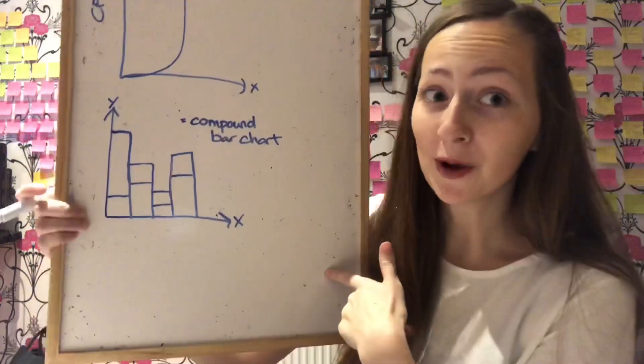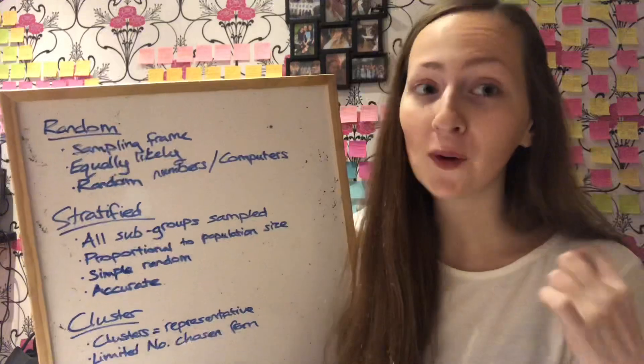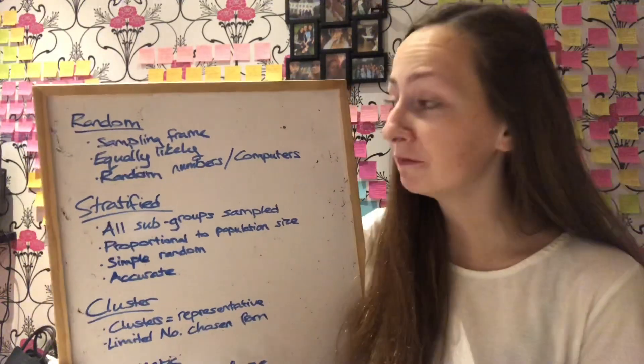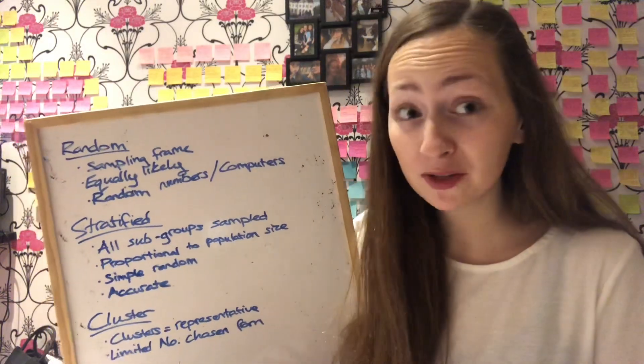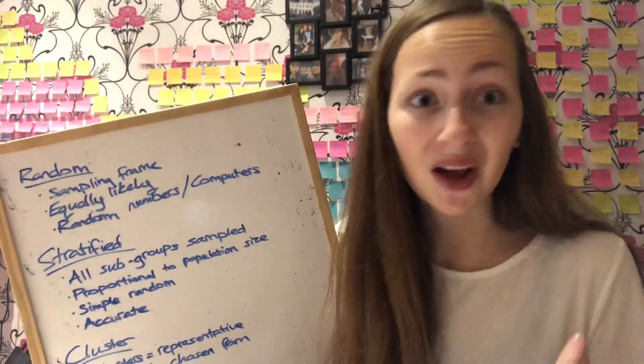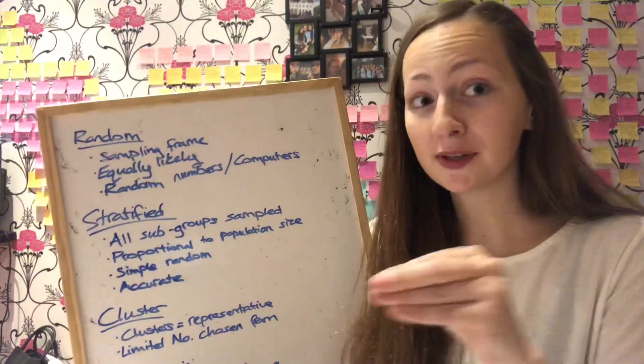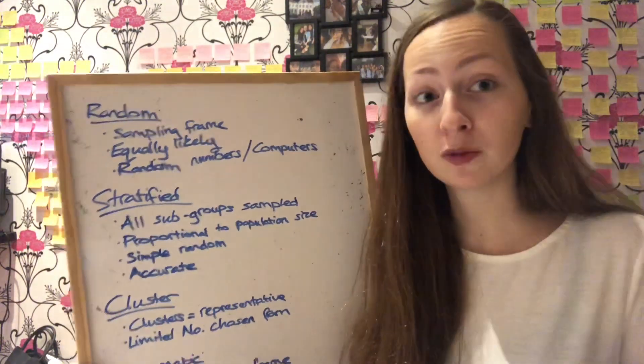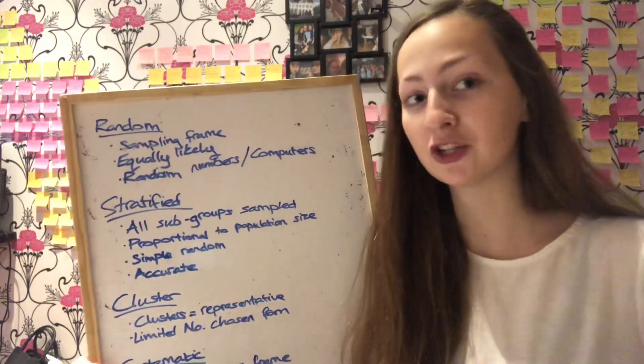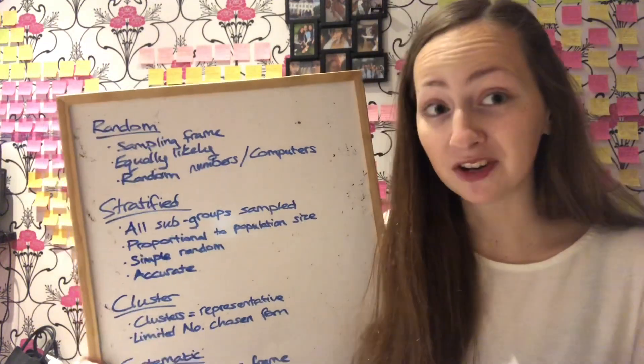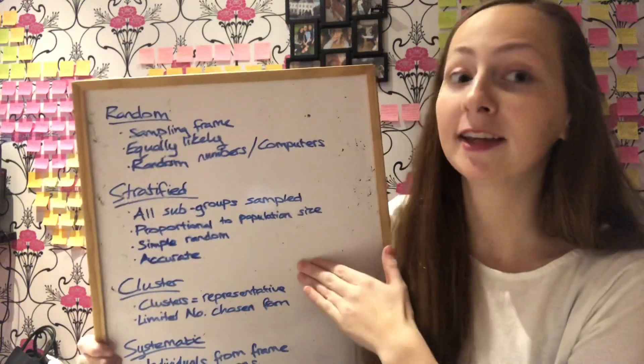Cumulative frequency graph, compound bar chart. And then we also have all of the different types of samples. So for a simple random sample you need a sampling frame. Everybody is equally likely to be chosen. And it is done by using random numbers or by being computerised. It's the same as picking numbers out of a hat. And then you've also got stratified sampling. This is where all subgroups are sampled. And the number that are sampled in each subgroup is proportional to their population size within the whole population. So you use a sampling fraction for that. So then once actually in the subgroup it's done by simple random sampling again. And this is very accurate.